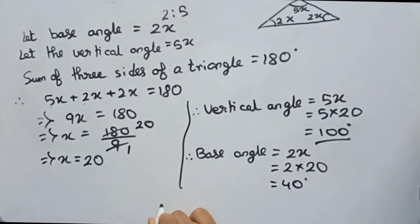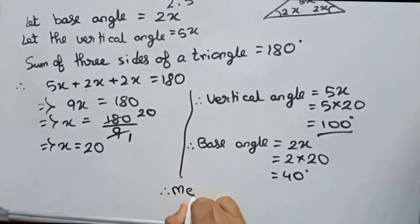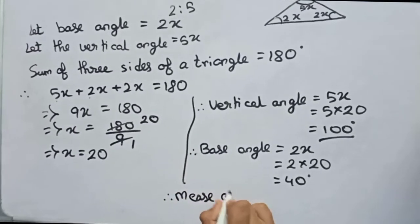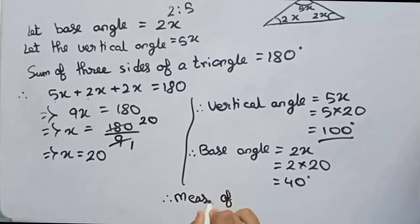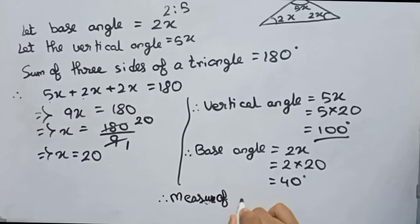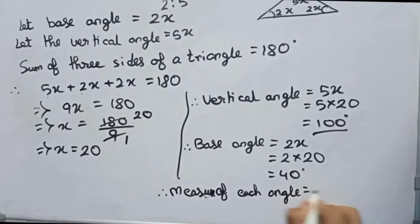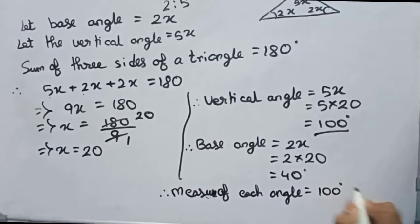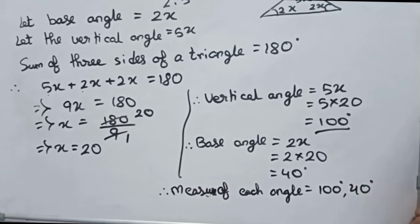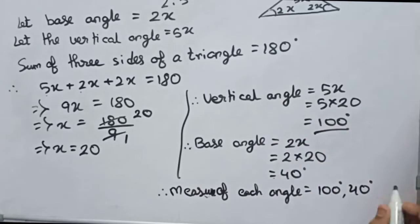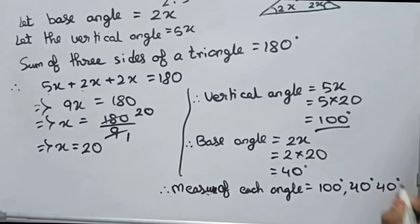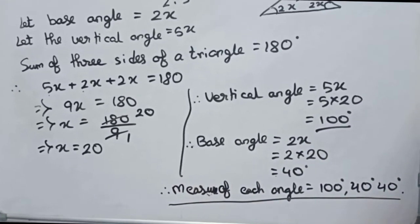So therefore measure of each angle equals to 100 degrees, 40 degrees. As there are 2 base angles, you will add 40 degrees once more. So this is our complete answer.